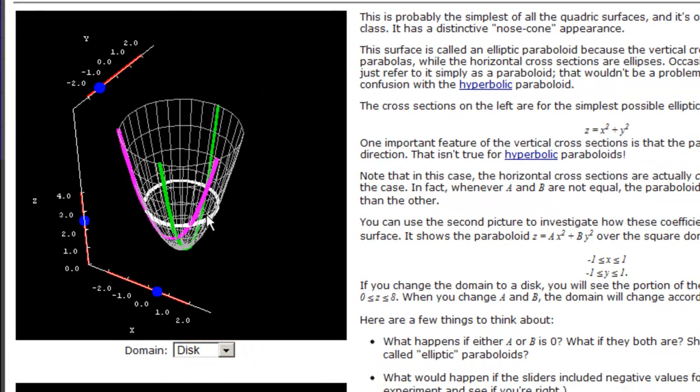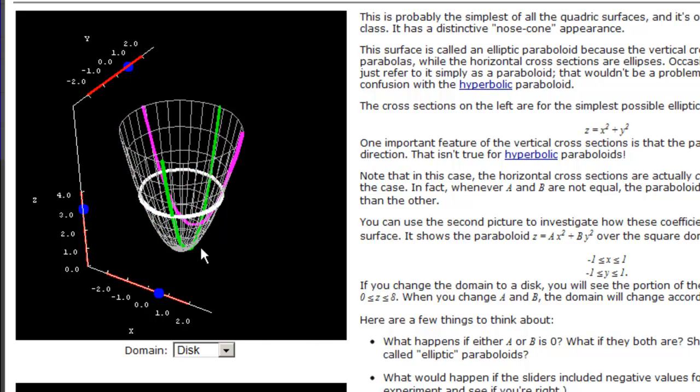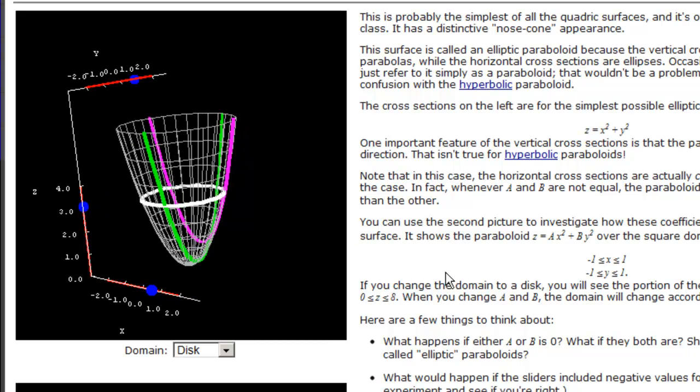And then we can do the same thing if we want our domain instead of being a square to be a disk. Same idea, same cross-sections. It doesn't really change the cross-sections, but it really drives home that point. You can rotate this and zoom it.